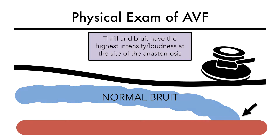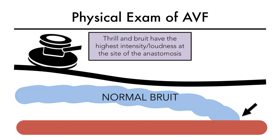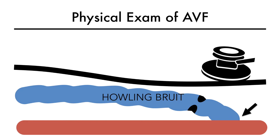Now let's listen to what a normal bruit sounds like. A high-pitched howling bruit with only a systolic component and loss of diastolic component may indicate stenosis. The entire course of the access, including the area under the clavicle, should be assessed for an abnormal bruit.